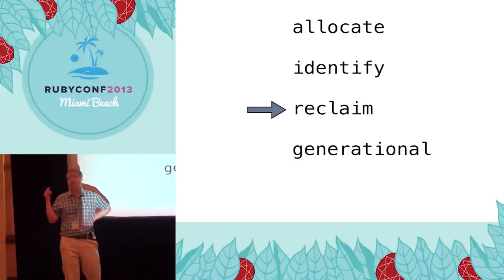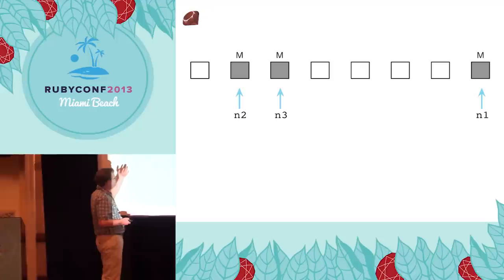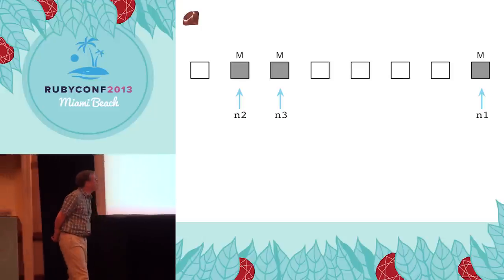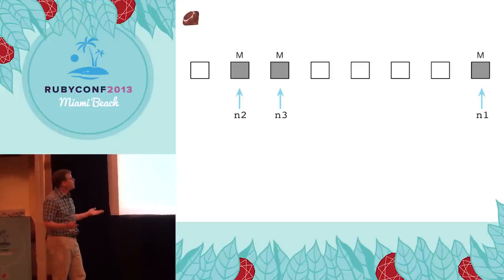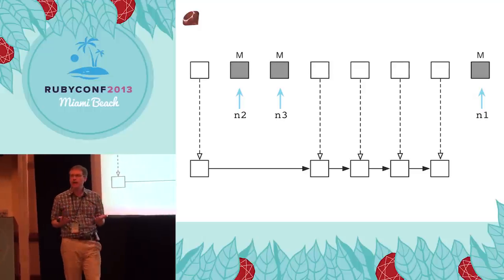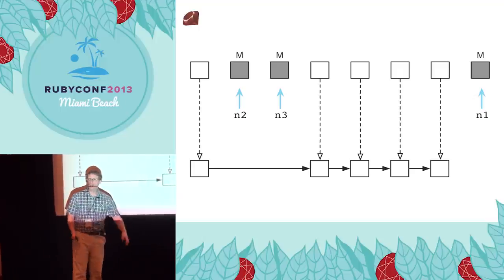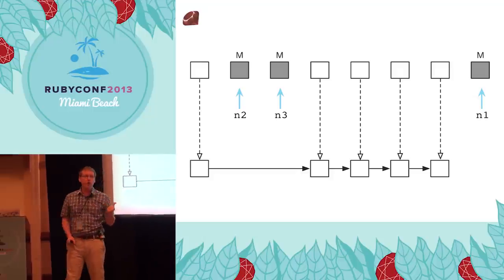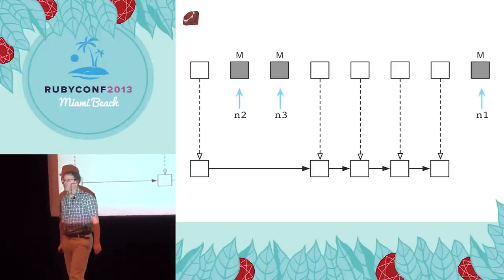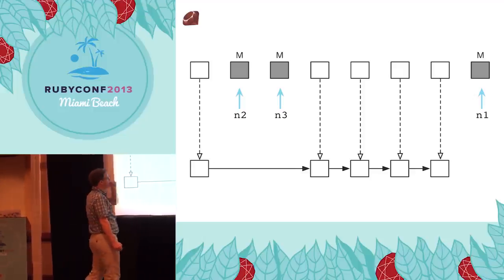Now we've identified garbage objects — what do we do with them? How do we reclaim memory? Going back to standard Ruby with the free list, we have live objects and garbage objects. The algorithm is called mark and sweep — we've done the marking, now we do the sweep. We put the garbage objects back on the free list. Since it's a linked list, we just modify pointers to reform the list — no copying, quite fast.